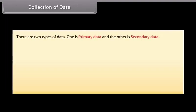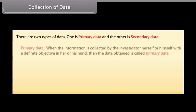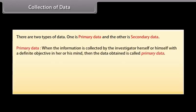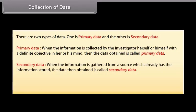There are two types of data. One is primary data and the other is secondary data. Primary data: when the information is collected by the investigator herself or himself with a definite objective in her or his mind, then the data obtained is called primary data.